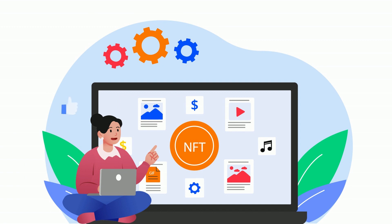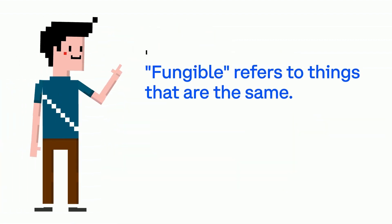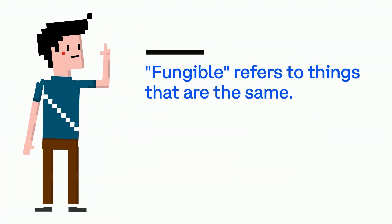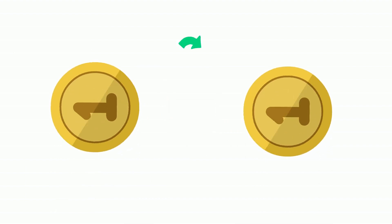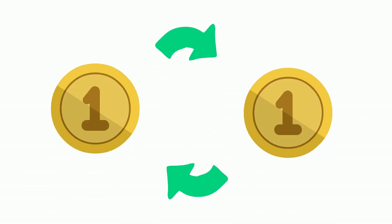NFTs are a special object in crypto, but to really understand what they are, we first need to understand what Fungible means. Fungible refers to things that are the same. When two things are the same, they have equal value, so they are interchangeable. They can be swapped one to one.